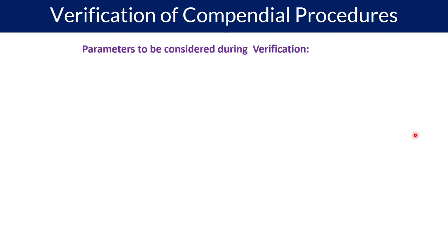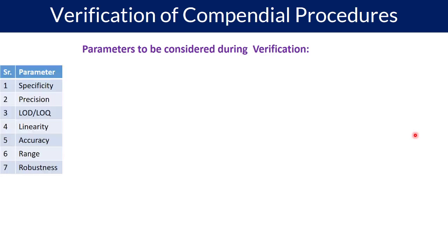Let us now understand what parameters need to be considered during verification of a compendial procedure. There are seven parameters generally considered: specificity; precision — which includes repeatability and intermediate precision or reproducibility; LOD (limit of detection); LOQ (limit of quantitation); linearity; accuracy; range; and robustness.